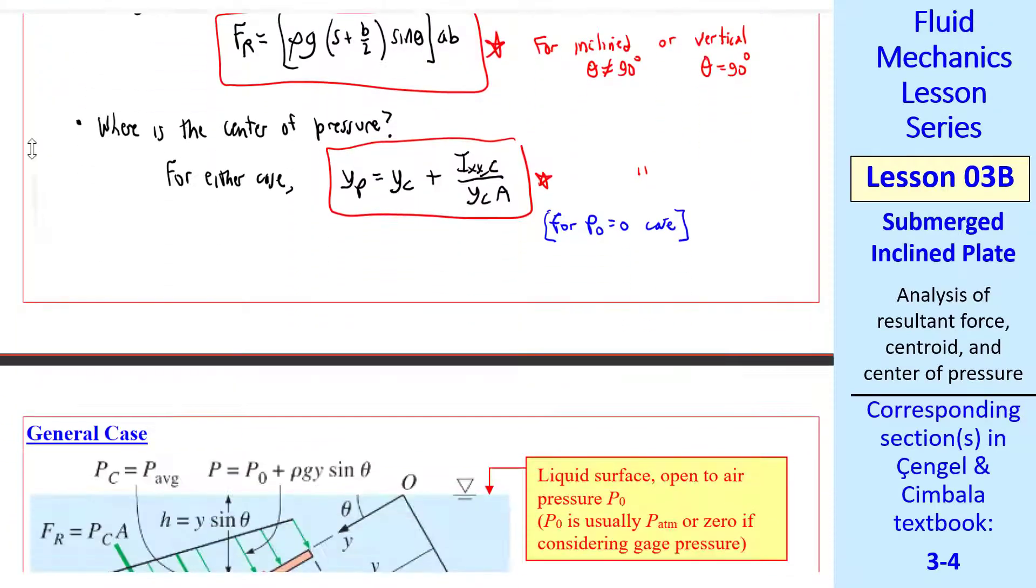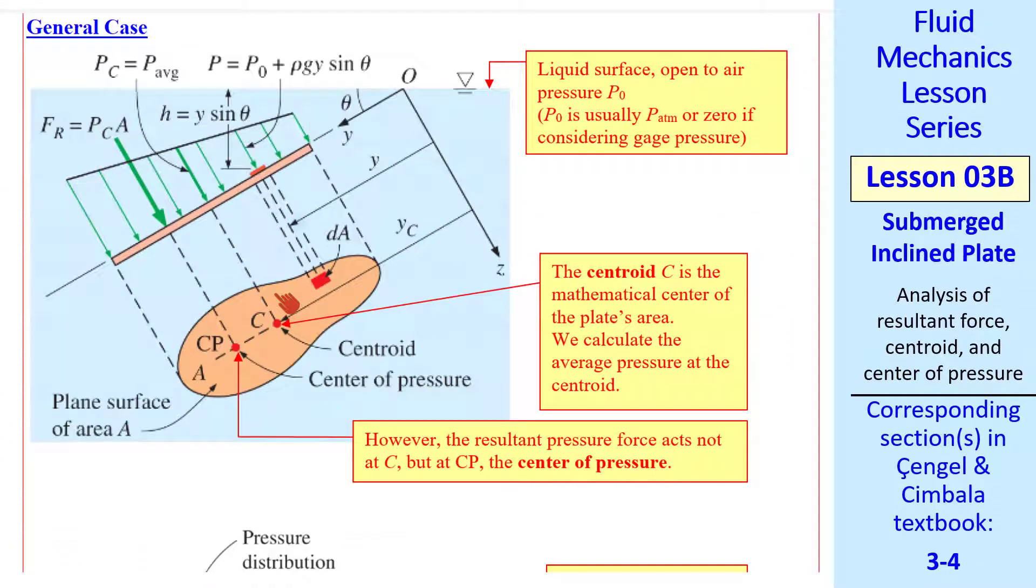Now let's look at the more general case, where we don't have a rectangular plate, but some arbitrary shape. We do the same thing, namely Y is from the surface, parallel to the plate, and down. Any depth here is Y sine theta. The average pressure is still at the centroid, which is here. The center of pressure is a little bit below the C, and the resultant force is PC times A, as it was before, acting at the center of pressure. Of course, we have to calculate this area as well. We do the same thing with P naught.